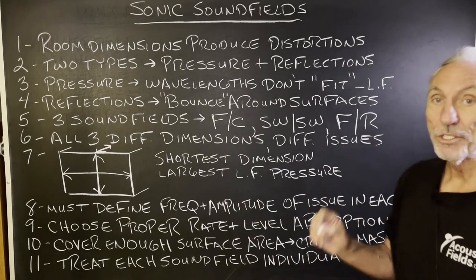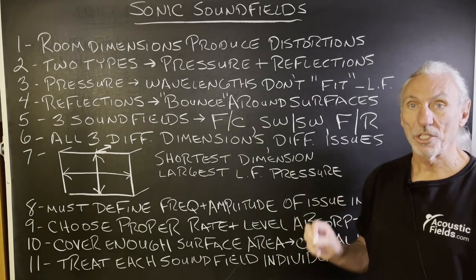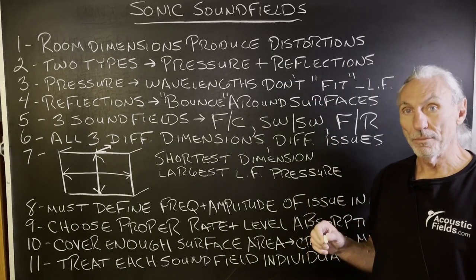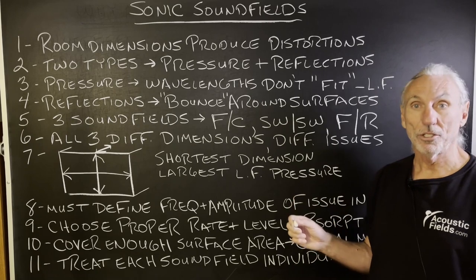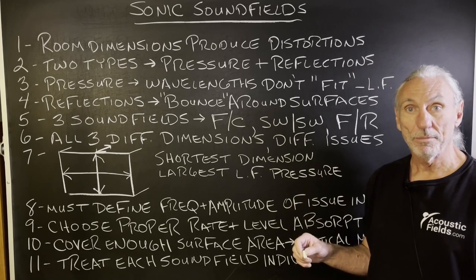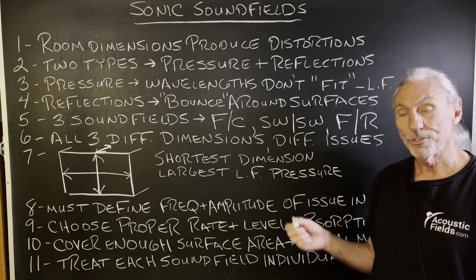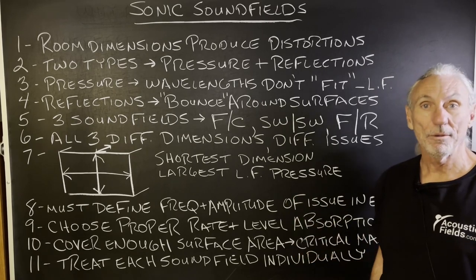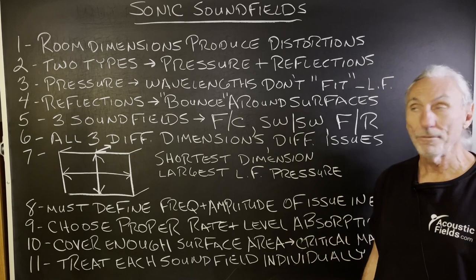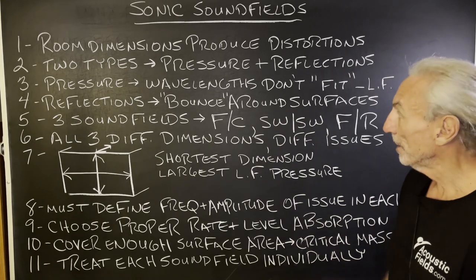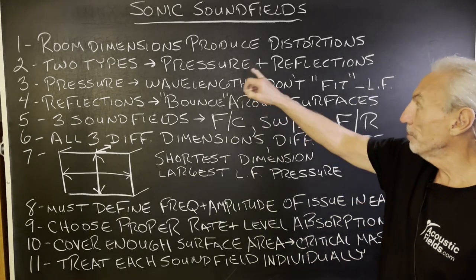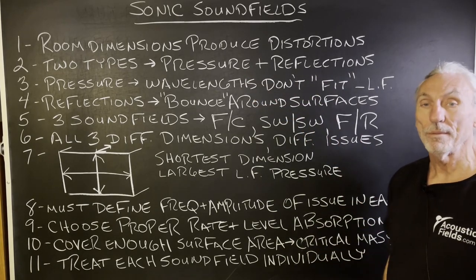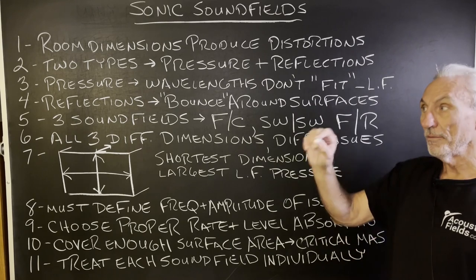Room dimensions produce distortion. Certain dimensions cause certain low frequency problems. Certain dimensions contribute to high reverberation or reflection issues. We have two types: pressure and reflections. Those are our two main problems in rooms.